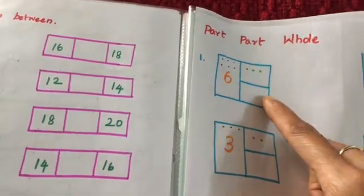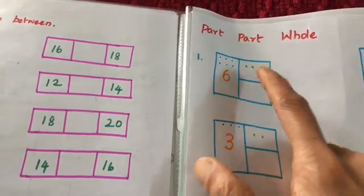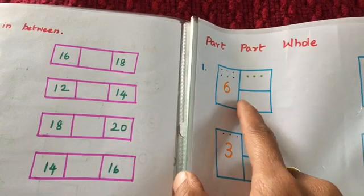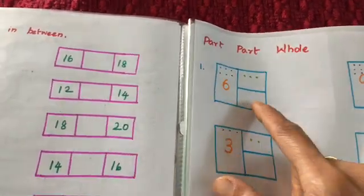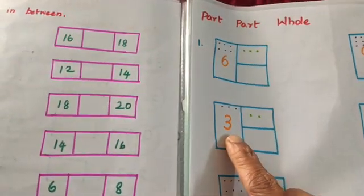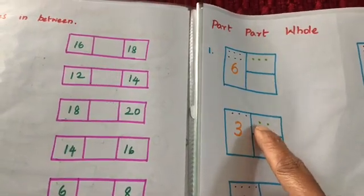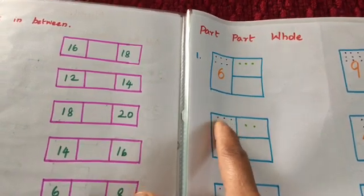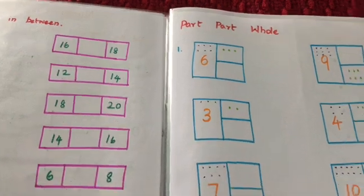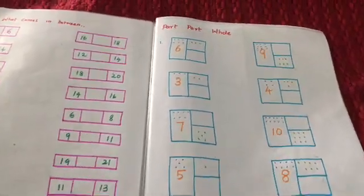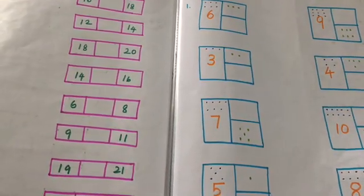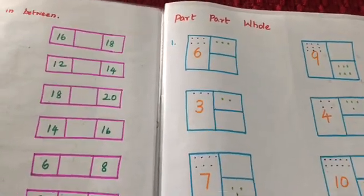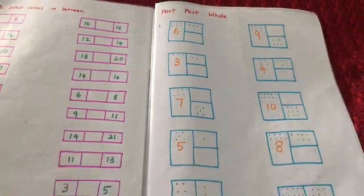We have the part-part-whole activity. The whole is 6, shown with 6 dots, and one part has 3 dots. He crosses 3 dots and counts the remaining — 3 remaining — so 3 plus 3 makes 6. For whole 3 with 2 dots in one part, he draws 1 dot in the other part. This shows the relationship between addition and subtraction.